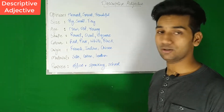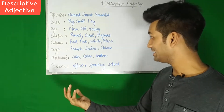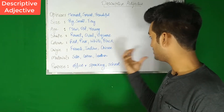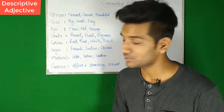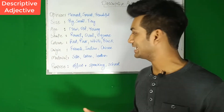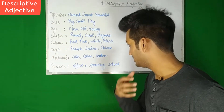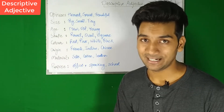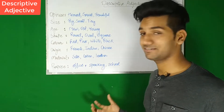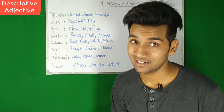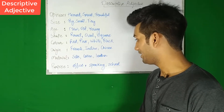We also use origin or nationality: French, Indian, Chinese - 'I love Indian food,' 'You love Chinese food,' 'I like French culture.' Then we describe using materials like silk, cotton, leather - 'It's a leather bag.' Then we use purpose: office, speaking, school. Now you must be confused that these words - office, speaking, school - seem to be nouns. They are, but when we use them as a descriptive adjective, they act as an adjective.